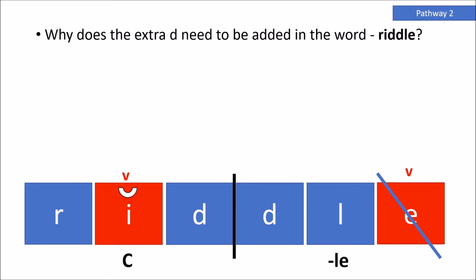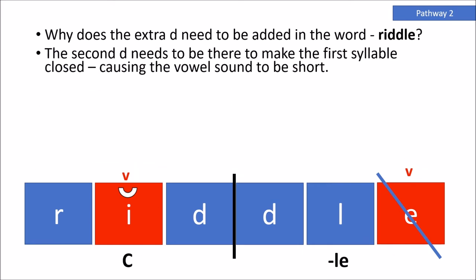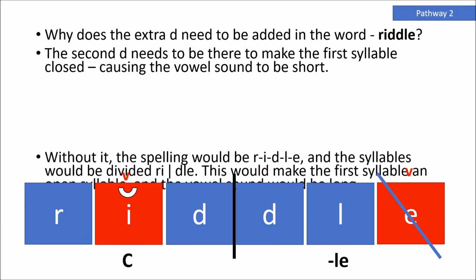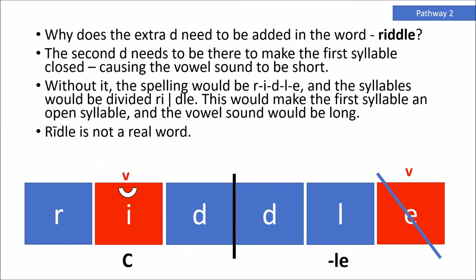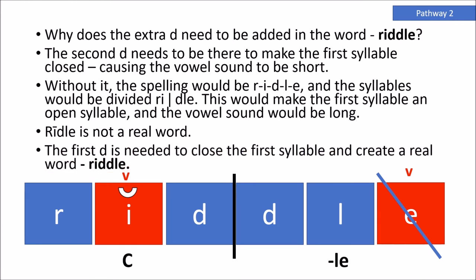Why does the extra D need to be added in the word RIDDLE? The second D needs to be there to make the first syllable closed, causing the vowel to be short. Without it, the spelling would be RIDLE, and the syllables would be divided RI and DLE. This would make the first syllable an open syllable, and the vowel would be long. RIDLE is not a real word. The first D is needed to close the first syllable and create a real word: RIDDLE.